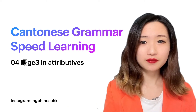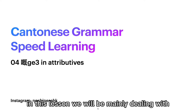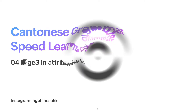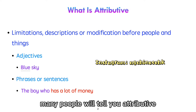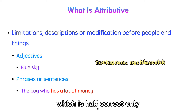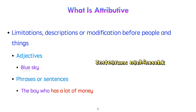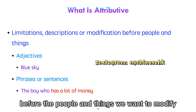GET in Attributives — so what is Attributive? In this lesson, we will be mainly dealing with this character when we use Attributives. Attributive is not just adjective, which is what many people say — that's only half-correct. Attributive can be adjectives or other things: usually limitations, descriptions, or modifications before the people and things we want to modify.